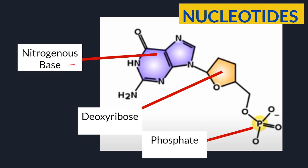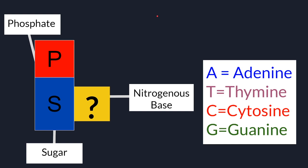Nitrogenous base siya kasi meron siyang madaming nitrogen na nakabit sa kanya. And it's called deoxyribose kasi sa RNA, meron siya ditong oxygen and hydrogen na nakalagay. And lastly, it's the phosphate. This is your nucleotides, and iba lang natin siya na itsura for easier understanding. You have the phosphate, the deoxyribose or the sugar, and the nitrogenous base.